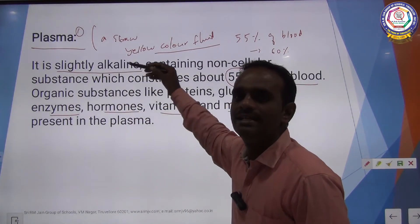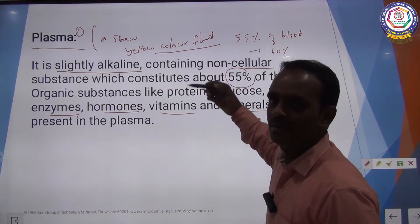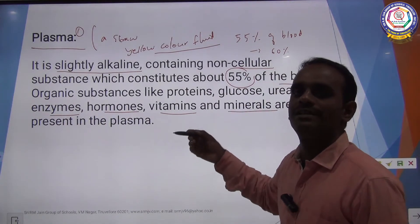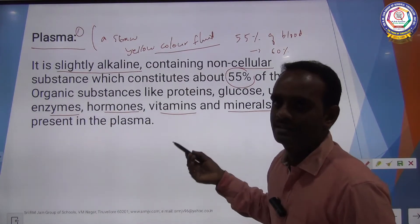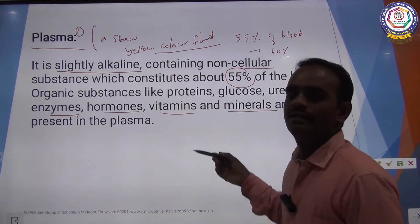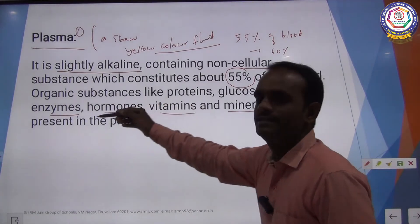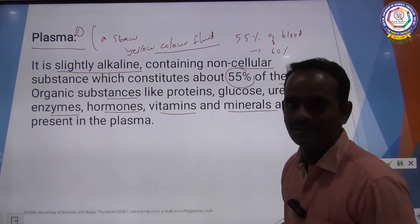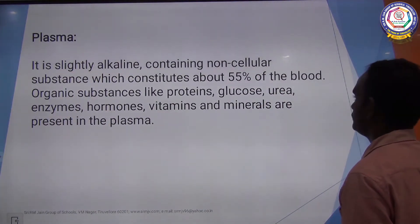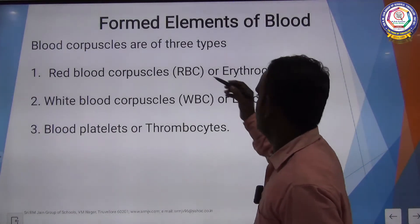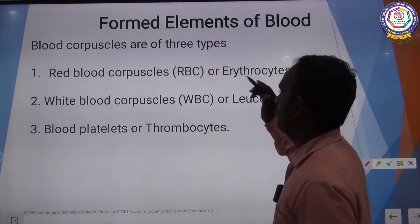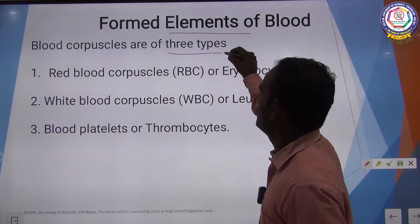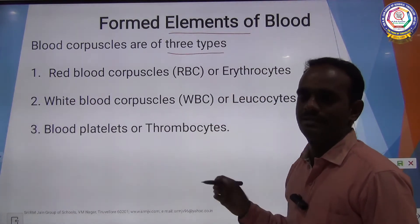Plasma is slightly alkaline and it is made up of both non-cellular substances as well as organic substances. Organic substances include protein, vitamin, carbohydrate, enzymes, and hormones. The next component of blood is Formed Elements. There are three different types of blood corpuscles or blood cells.